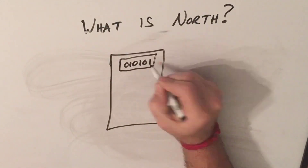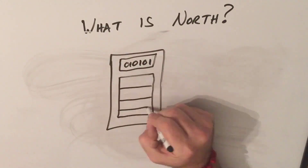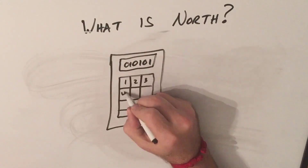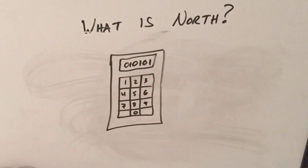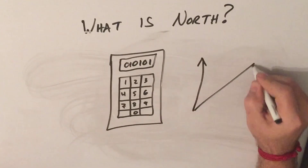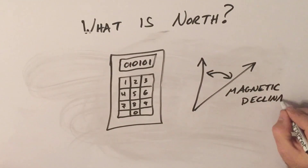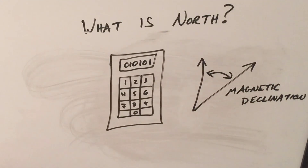Calculations can be made to adjust from Magnetic North to Grid North. This is known as Magnetic Declination, and we will cover it in a future episode.